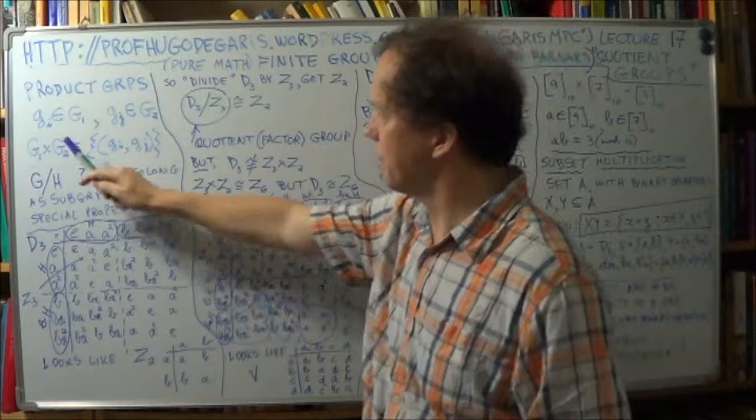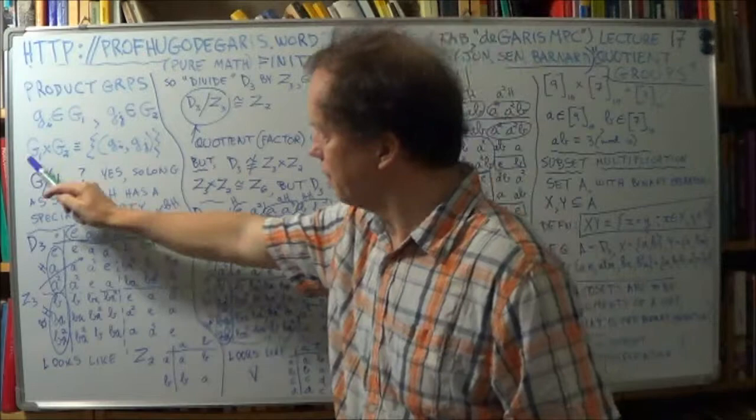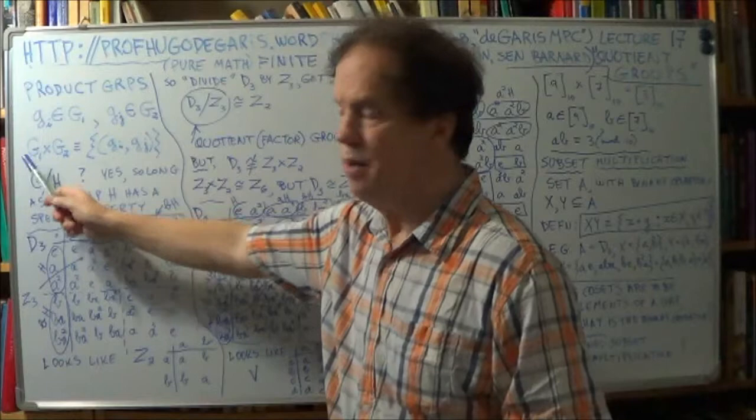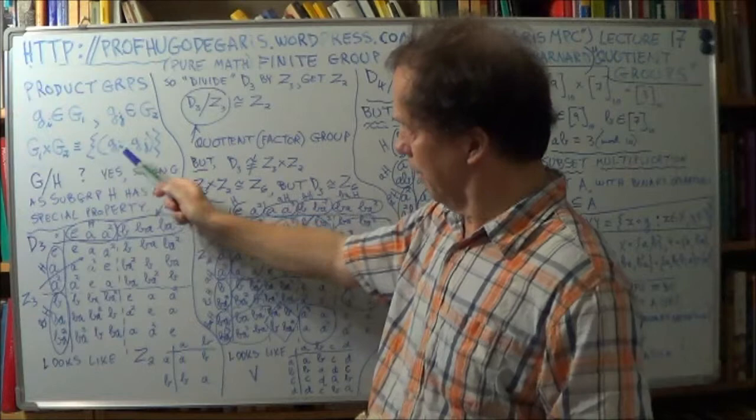Now, you go back quite a few lectures, we talked about product groups, right? So, if this is just an arbitrary element of group one, this is an arbitrary element of group two, then you can define a product of these two groups that generate a much larger group. So, if this is order M, and this is order N, this product group will have order size M times N, okay?